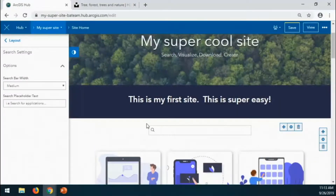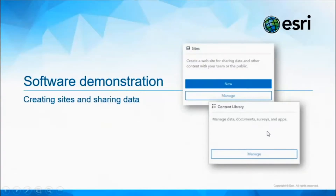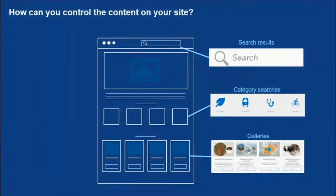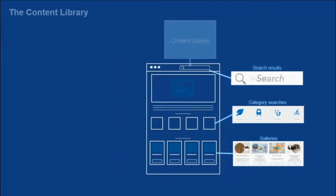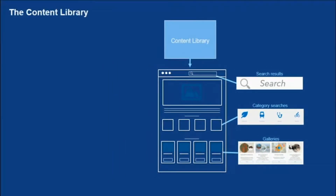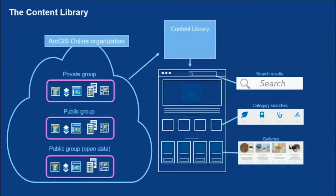You might be wondering how do I get the content into my site that people will want to search for. You can have a search bar, category searches, and galleries. In ArcGIS Hub, we've built something called the content library — you'll continue to see this evolve. The content library stores what you'd like to have surfaced on your site, and you populate your content gallery by choosing content in your ArcGIS Online organization.